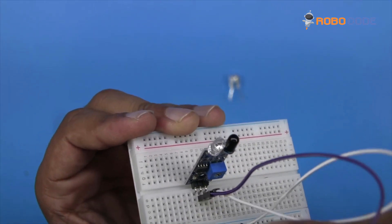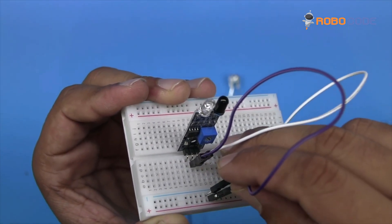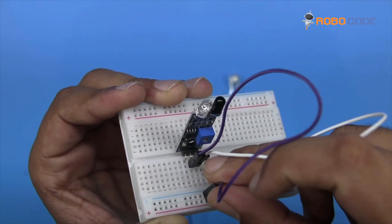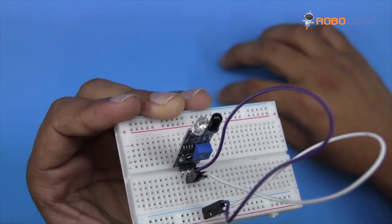Once that is done, take another male jumper wire and insert it on the second pin, then insert the other side right next to the white wire.